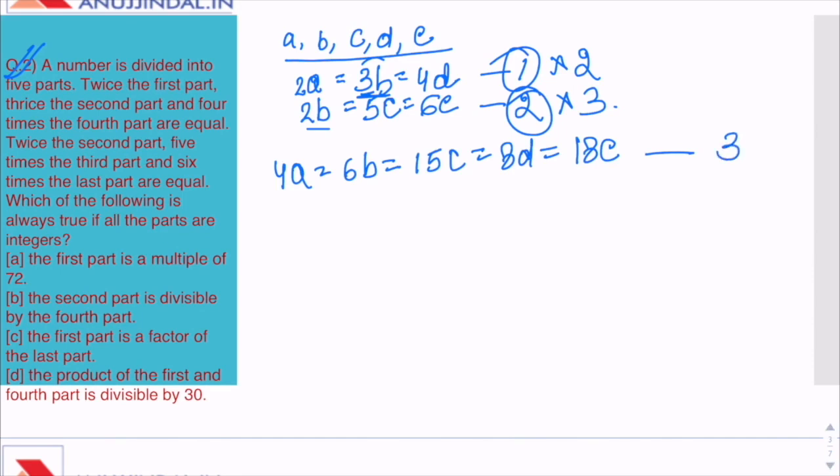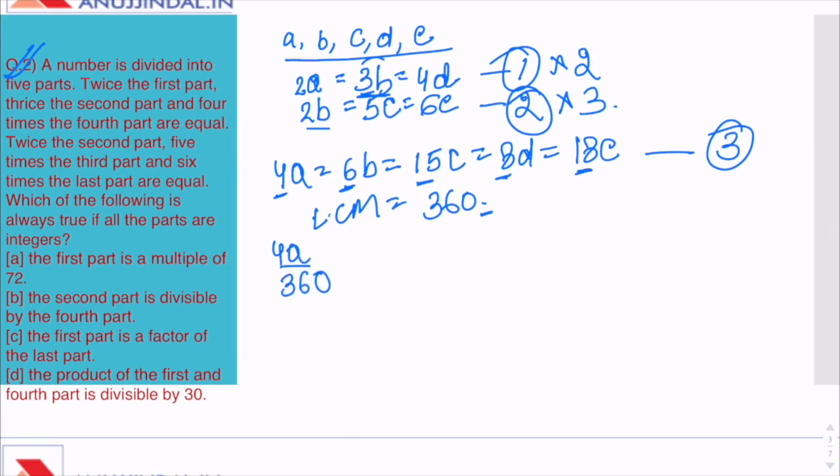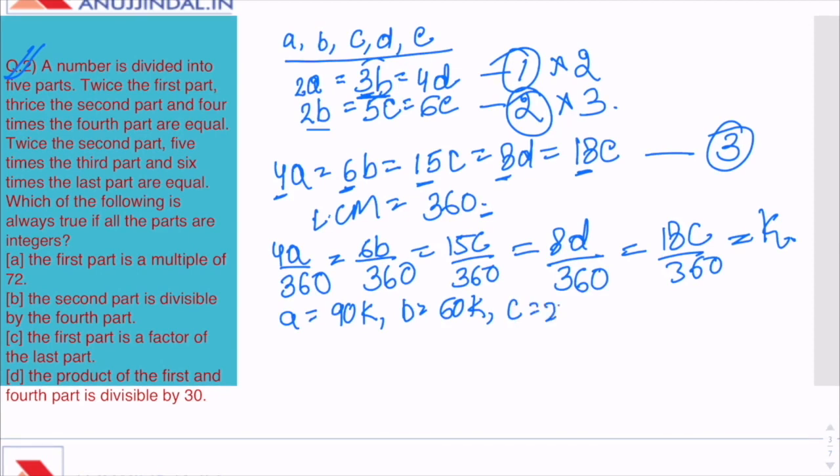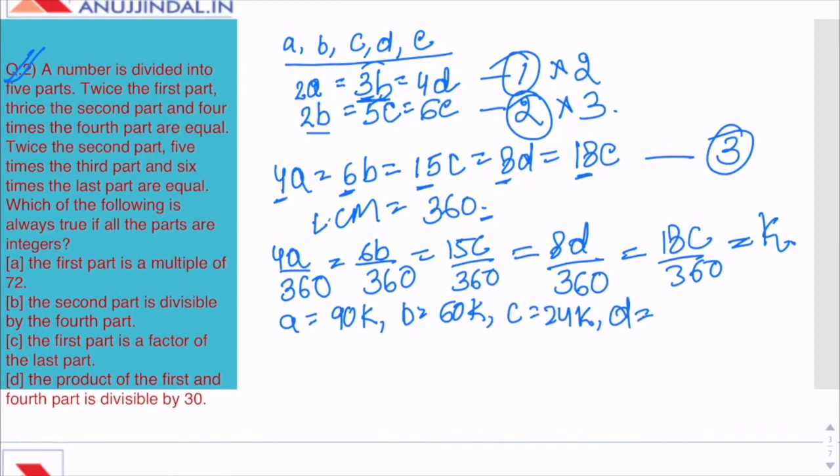We get 4a equals 6b equals 15c equals 8d equals 18e. This is equation 3. We have to find the LCM of these coefficients, so their LCM comes out to be 360. We will divide each of them by the LCM to make them equal. So we get a equals 90k, b equals 60k, c equals 24k, d equals 45k, and e equals 20k. Now we have to verify the options.